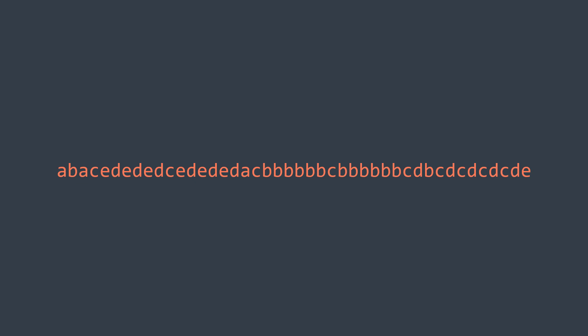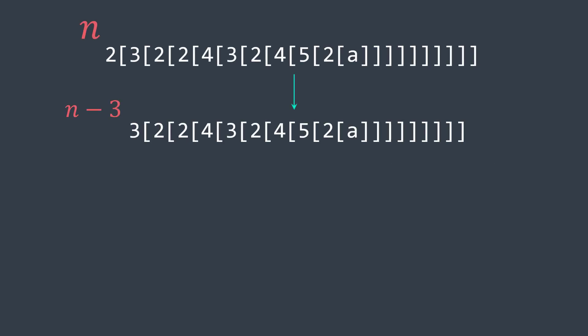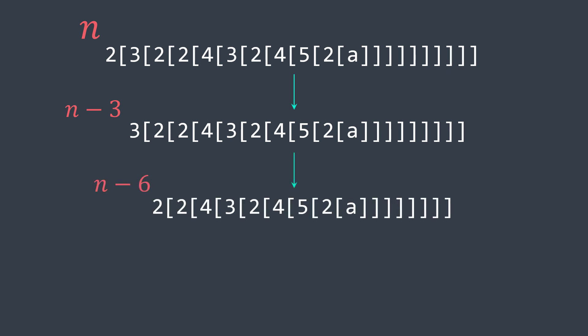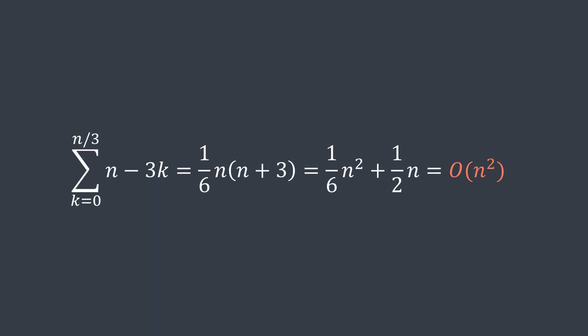The problem with this solution is that it's quite slow, because before being able to recursively call the function, we first need to find the end of the inner encoded string, which may require traversing the whole string. In the worst case, we traverse n characters for the initial string, n minus three for the inner one, then n minus six, n minus nine, and so on. Even though the size is decreasing, we still get O(n²) time complexity, because the sum of n minus 3k, where k goes from zero to n divided by three, gives O(n²).